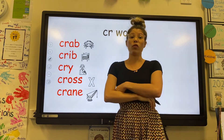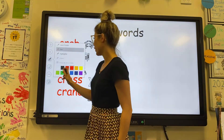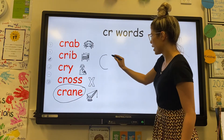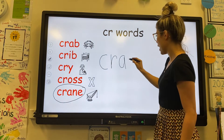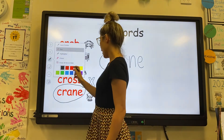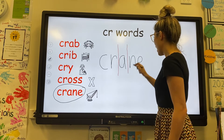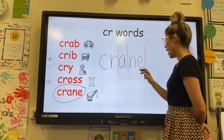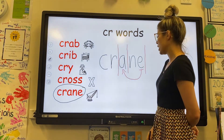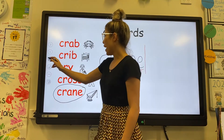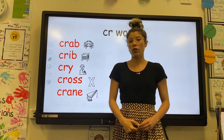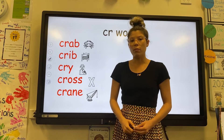Our last word is the word crane. The letters in crane are C, R, A, N, E. And the sounds that we can hear in the word crane are CR, A, N. So we have our silent bossy E, which is telling this vowel you need to do the talking. The word crane — it's a piece of machinery that is usually used for construction. So I drove the big crane.